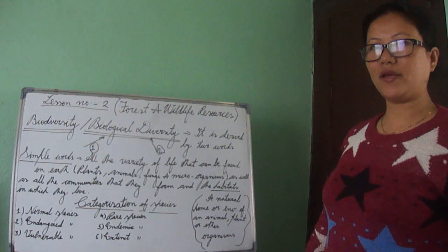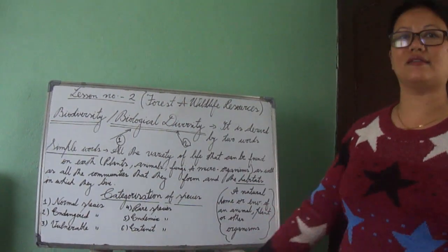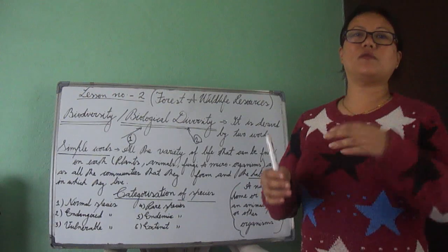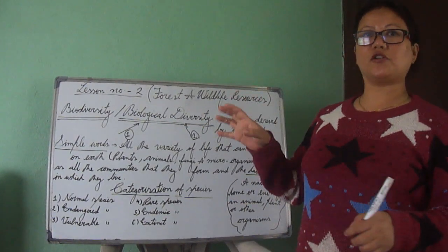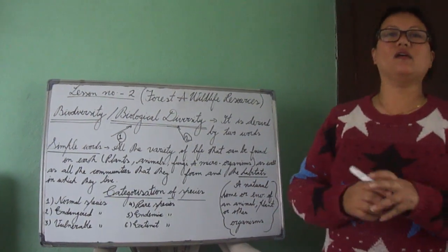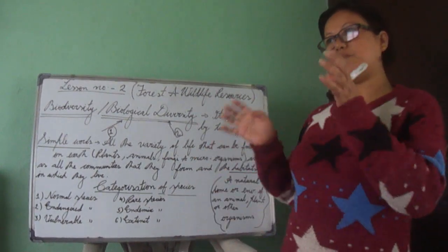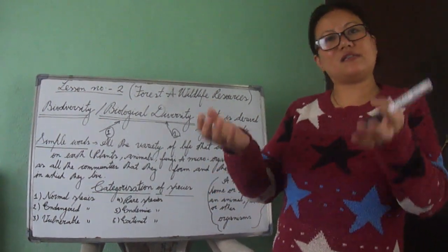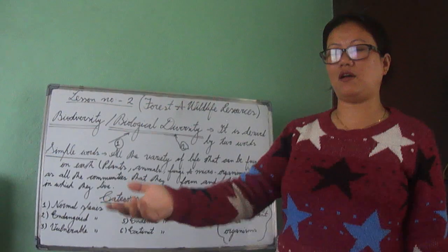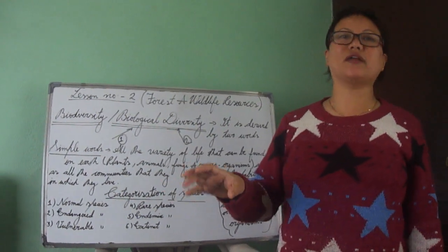Now, coming to our main topic: categorization of different species. I've made six categories — you can check your books as well. The first one is Normal Species. These are species — both plants and animals, meaning flora and fauna — whose population is already in abundant amounts on Earth. We don't need to worry about saving them; their numbers are satisfactory. For example, rodents fall under normal species.